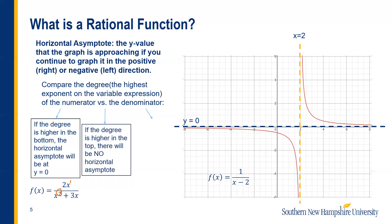Another thing that could happen is if the degree is higher in the numerator — if it is, there won't be a horizontal asymptote. For example, if the degree in the numerator is 3 and the denominator is 1, there's no horizontal asymptote at all. This makes sense if you plug in a really big number: the numerator grows much faster because you're cubing and squaring that number, while the denominator barely changes. So there is no limit — no horizontal asymptote.